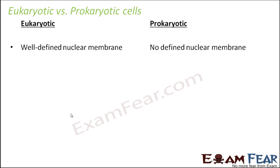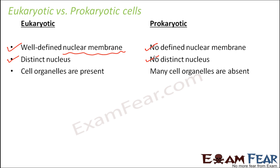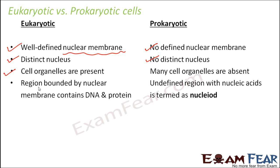Eukaryotic cells have a well-defined nuclear membrane - the double-layered structure outside the nucleus separating it from the cytoplasm. Prokaryotic cells have no defined nuclear membrane and no distinct nucleus, so all genetic material lies scattered in the cytoplasm. Cell organelles are present in eukaryotic cells but absent in prokaryotic cells. The region bounded by the nuclear membrane contains DNA and protein, whereas in prokaryotic cells, the undefined region with nucleic acids is known as the nucleoid.